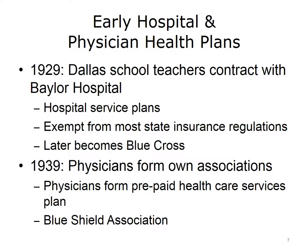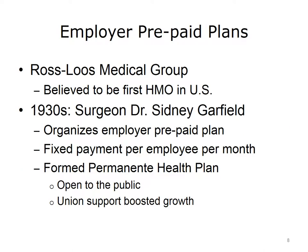Fearing loss of control over their patients, physicians began to form their own associations. In 1939, California physicians formed a prepaid plan that covered physician services. Other physician groups around the country organized similar plans, and these eventually merged to form the Blue Shield Association. In 1929, the Ross Luce Medical Group formed what is believed to be the first health maintenance organization in the United States and provided prepaid medical care to Los Angeles County employees.